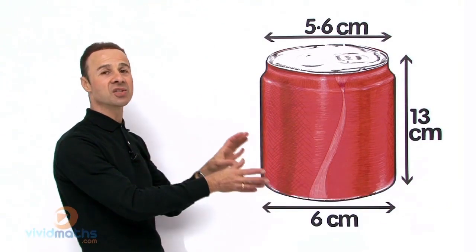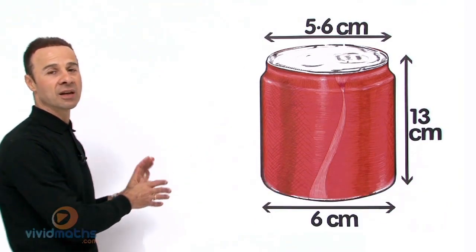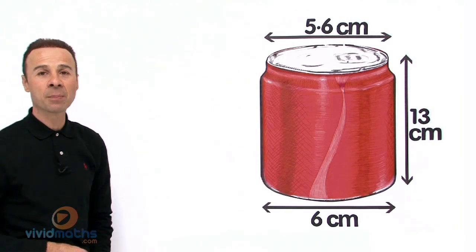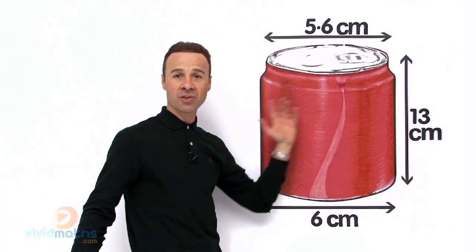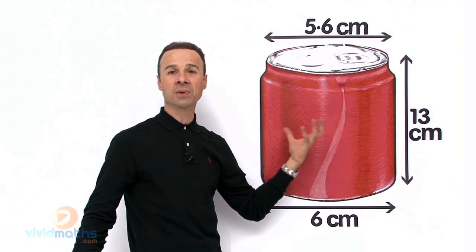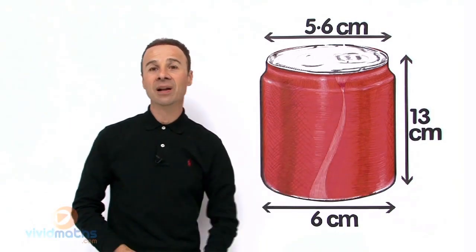Step number 3, all we need to do is substitute those values into that new transformed formula and come up with a complete and entire total surface area, the skin, the aluminum on this particular can of cola.